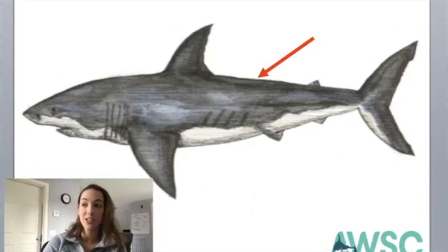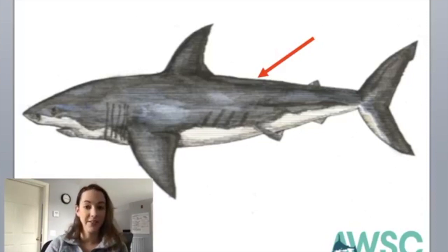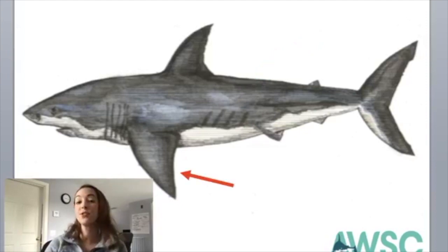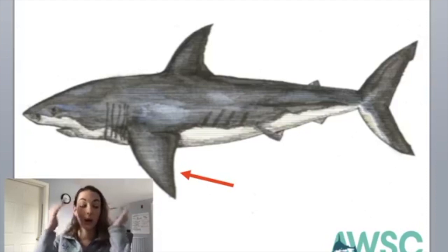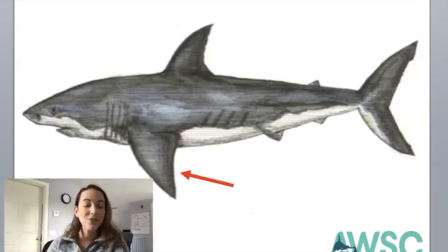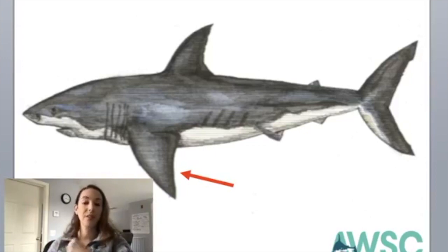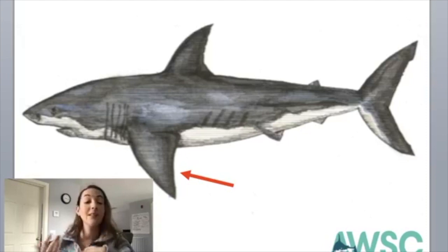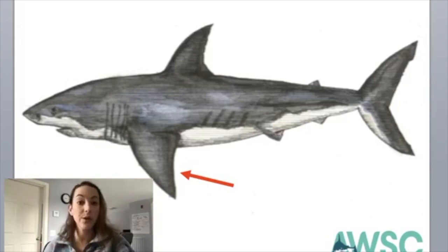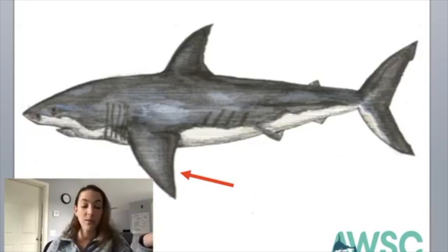We already said sharks have at least five gill slits and a cartilage skeleton. Next, we are going to talk about shark fins and how sharks move. I want you to sit and imagine a shark swimming — maybe you have seen one at an aquarium or watched videos online. Also imagine how a fish swims — maybe you have a fish tank at home or have been to an aquarium and watched fish swimming there.